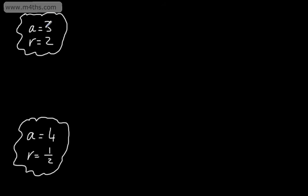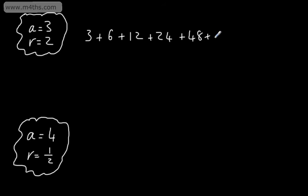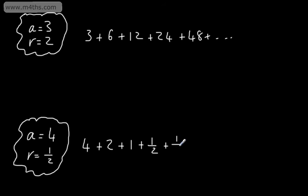What I'm going to do is generate terms in these series. The first term is 3, then we add 3 times 2, multiply by 2 again and add it, and so on. For the second series, the first term is 4, then we multiply by a half and add it to get 2, then 1, then a half, then a quarter, and so on.